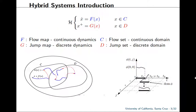A hybrid system is a system that exhibits both continuous and discrete behavior. Our way of modeling a hybrid system H consists of four components. We have a flow map F, which is a set of differential equations that describes the continuous dynamics of a system, and a flow set C, which is the domain of the continuous part of the system. We have a jump map G, which consists of difference equations that describes the discrete dynamics, and a jump set D, which is the discrete domain.